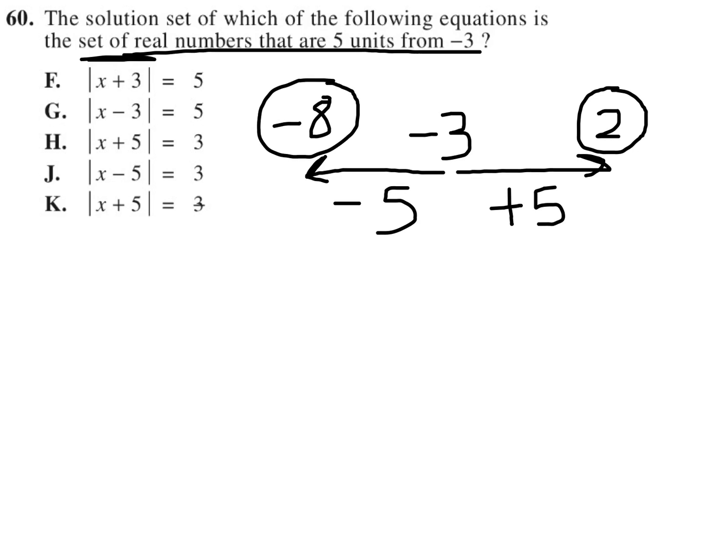So the set of real numbers that are five units from negative three is the set negative eight and two.